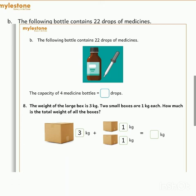Question number 8. The weight of the large box is 3 kg. Two small boxes are 1 kg each. How much is the total weight of all the boxes? Total means plus, addition. 3 plus 1? 4. And 4 plus 1? 5. So the answer is 5 kg.